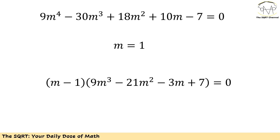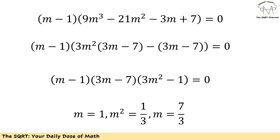Using polynomial long division to divide the degree-4 equation by (m minus 1), we get 9m cubed minus 21m squared minus 3m plus 7. To factor this degree-3 polynomial, I take out 3m squared from the first two terms, giving (3m squared)(3m minus 7), and the remaining (3m minus 7) factor appears again. So the roots are m equals 1, m squared equals 1/3, and m equals 7/3.